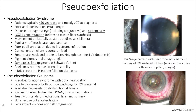Pseudo-exfoliation syndrome, sometimes abbreviated as PXF or PEX, is a systemic syndrome that is age-related, usually over the age of 50 and mostly over the age of 70, and involves ocular tissues with the gradual deposition of fibrillary material on the lens capsule, zonules, trabecular meshwork, corneal endothelium, iris and pupillary margin, and other tissues. The fibrillar material is thought to be due to abnormal turnover of the extracellular matrix in basement membranes.